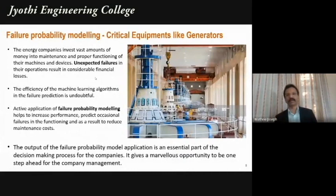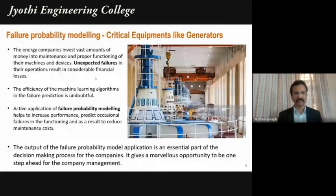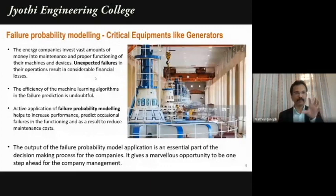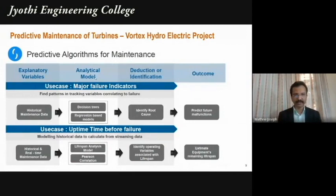Let's go through some use cases. This is a typical case of power generation. In hydroelectric plants, you have generators. When a generator fails suddenly, there's a power breakdown causing major problems downstream. Predictive maintenance is a very strong use case for AI — you can build predictive algorithms using machine learning to anticipate equipment failure before it happens.